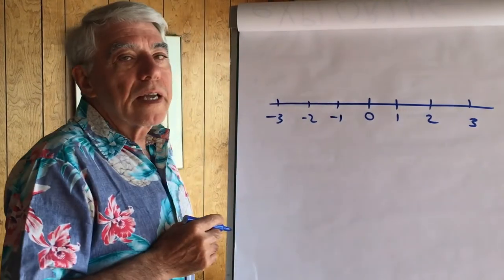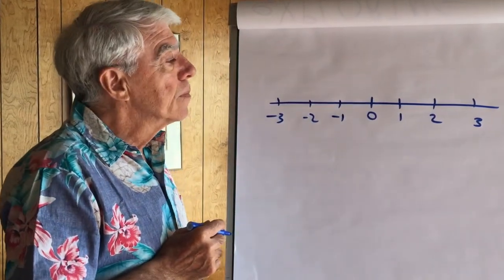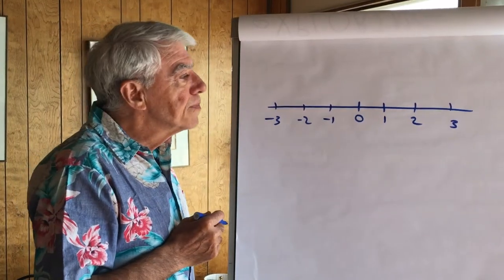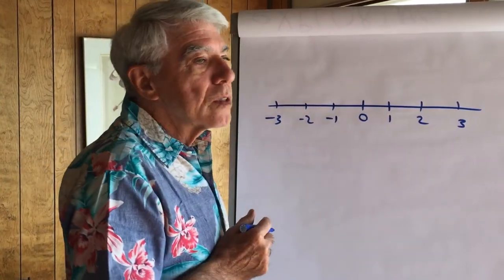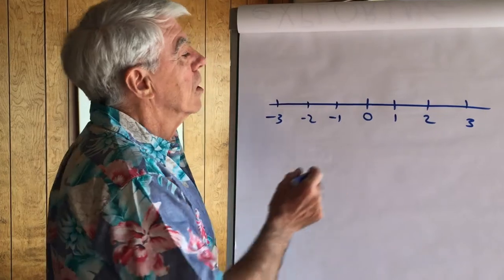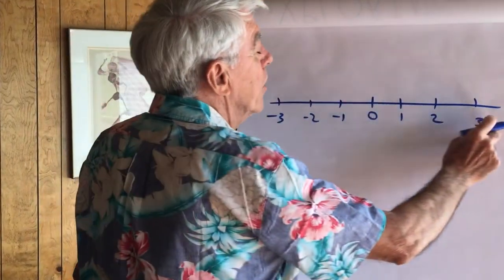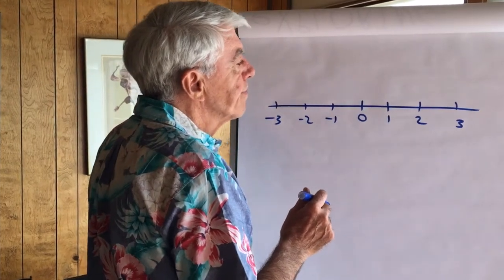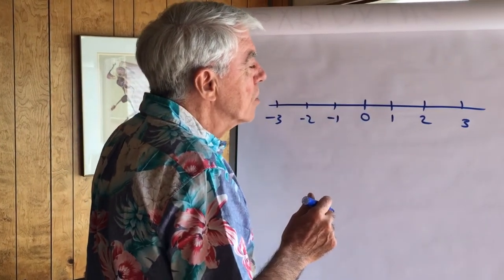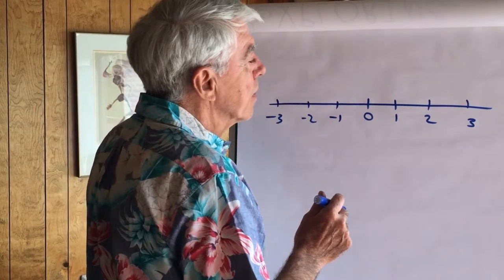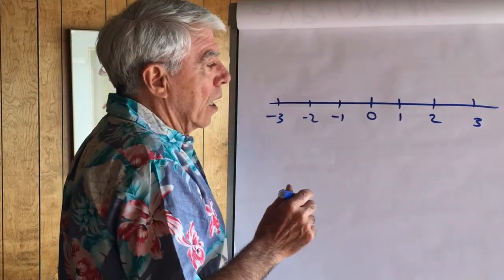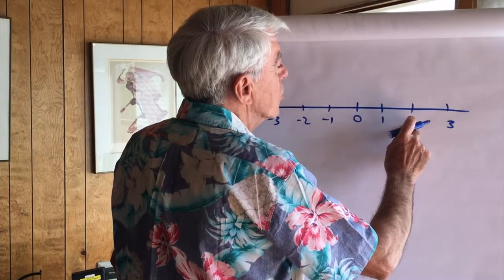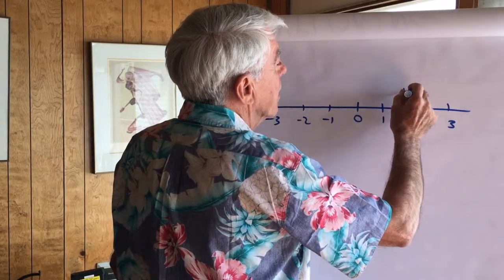The number line can represent anything. It could be years, pounds. In this case, we're going to represent exponents. These numbers are going to be exponents. We're going to work with 10 as our base. And let's start out with 10 squared. Exponent 2, 10 squared has a value of 100, 10 times 10.